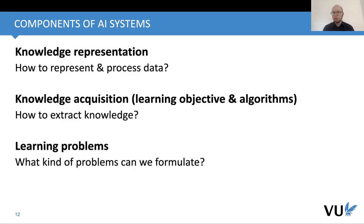If we talk about neural networks or deep learning specifically: our knowledge representation is a set of matrices or tensors — the weights of neural networks. We use a learning objective such as the likelihood function, and as our algorithm we use gradient-based methods to learn these weights from data. These two points — neural networks together with gradient-based optimization — are what we can think of as the core of deep learning.